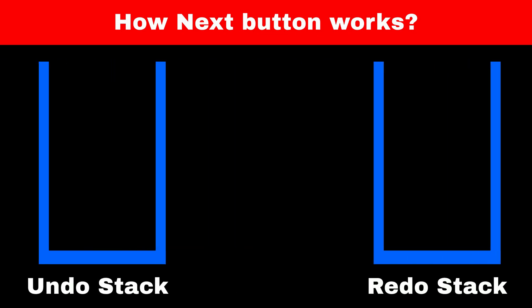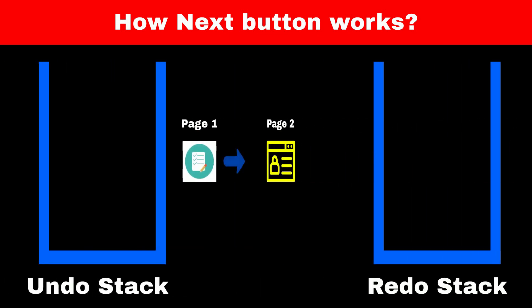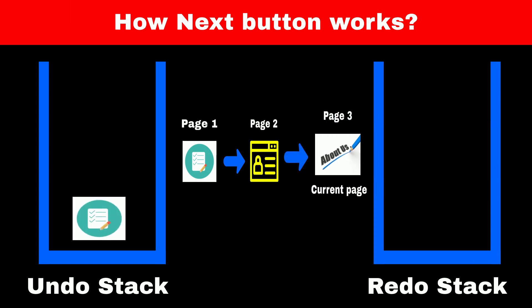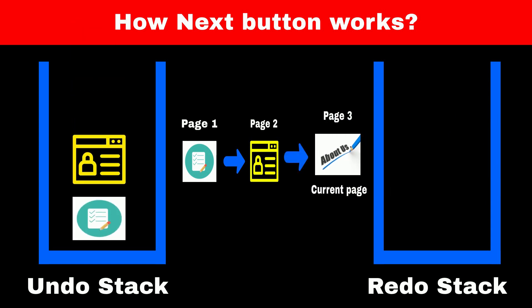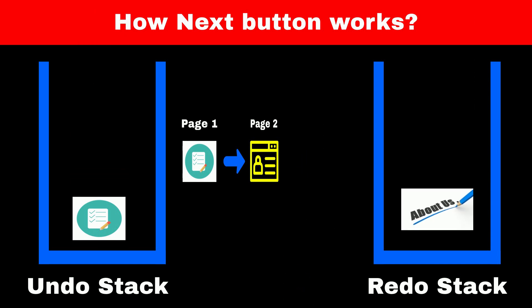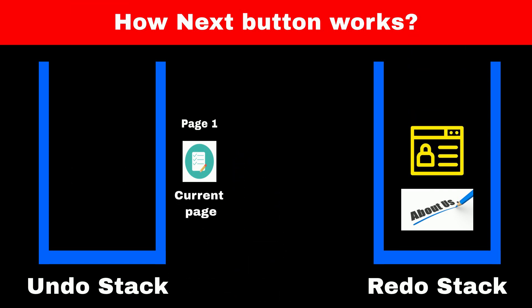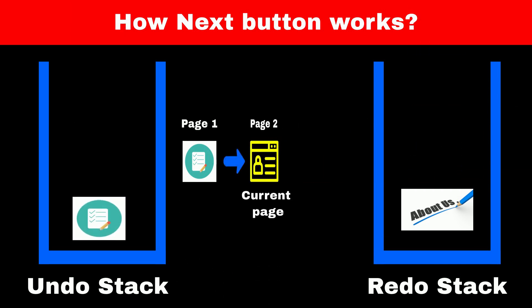To implement the next button in a web browser we will use another stack — let's call it the redo stack. When we navigate from page 1 to page 2 and page 2 to page 3, our undo stack will have all these pages. When we press the back button, we push page 3 to the redo stack, and when we press the back button again on page 2, we push page 2 to the redo stack. Now if we press the next button on page 1, we display and remove page 2 which is at the top of the redo stack.